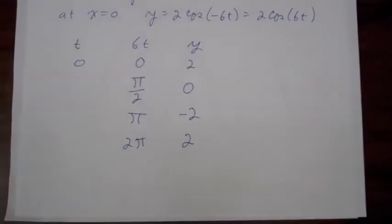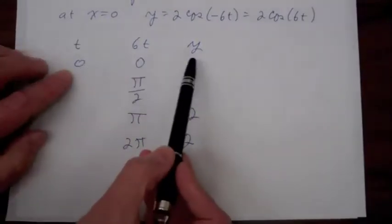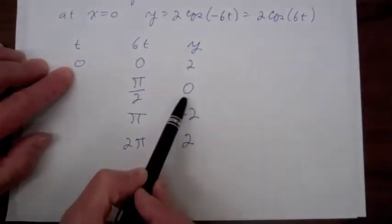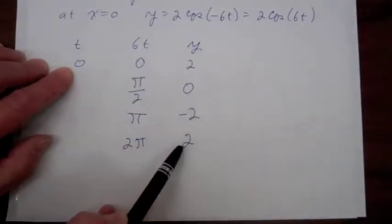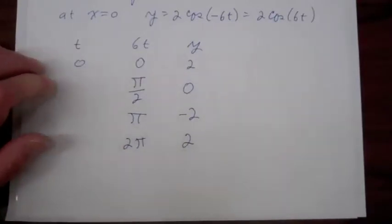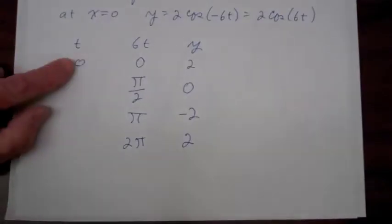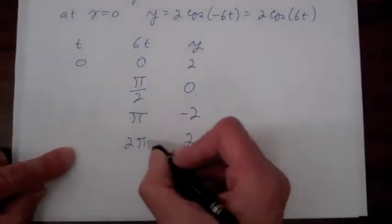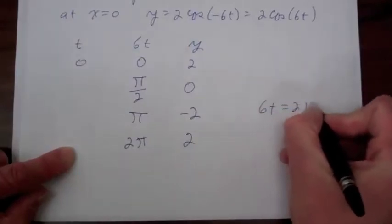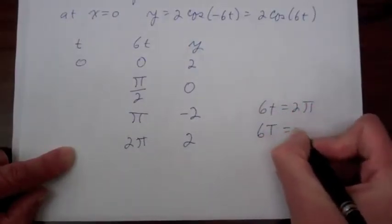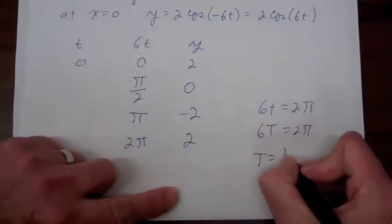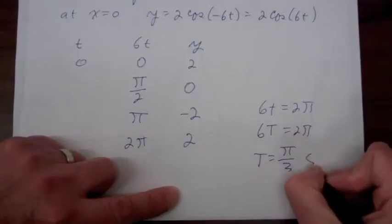Looking back, at t = 0 at location x = 0, y has a value of 2. It oscillates down to -2 and then back up to 2. The time for that to occur is from t = 0 to the value of t when 6t = 2π. So 6 times the period equals 2π, giving a period of π/3 seconds for this wave.